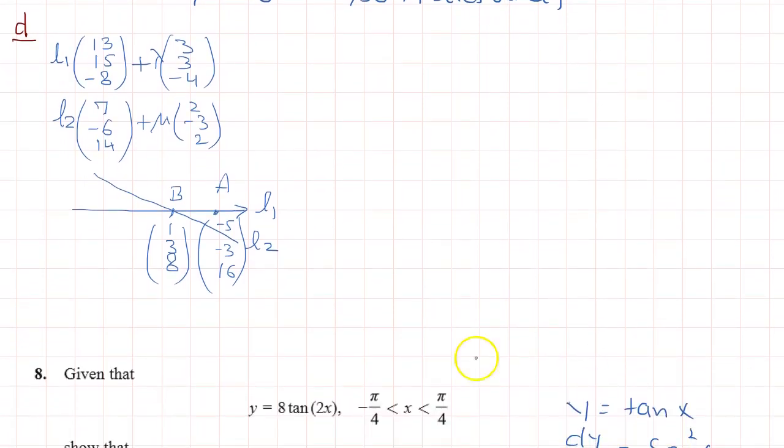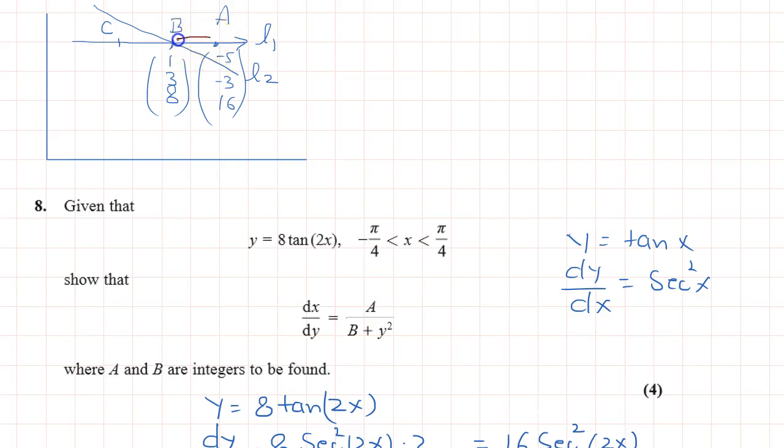Now part D says there is another point C and it is given that AB is equal to BC. This is given. The value of lambda we have proved at A is -6. The value of lambda we have proved at B is -4. So the value of lambda at C will be -2 because these distances are equal. These are the position vectors of C, B, and A.